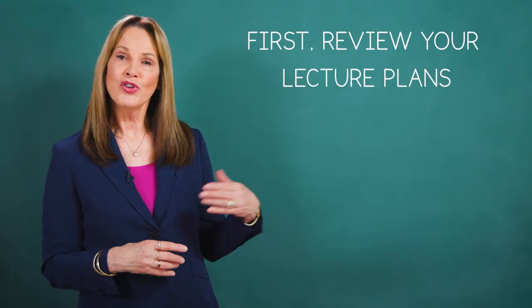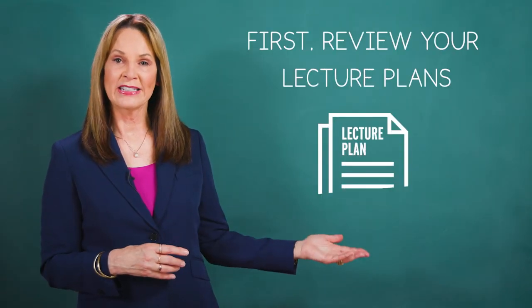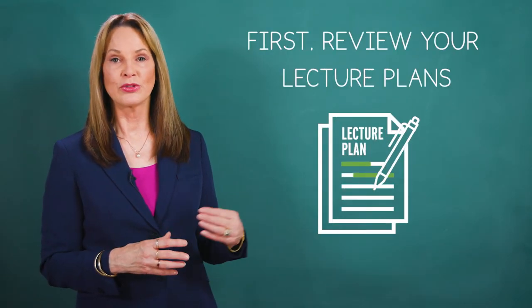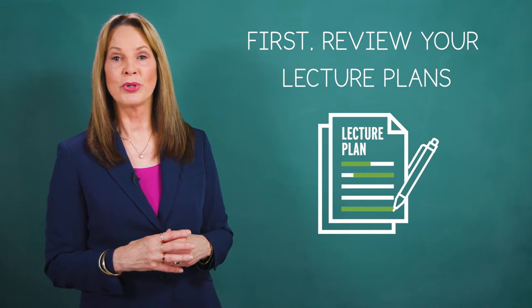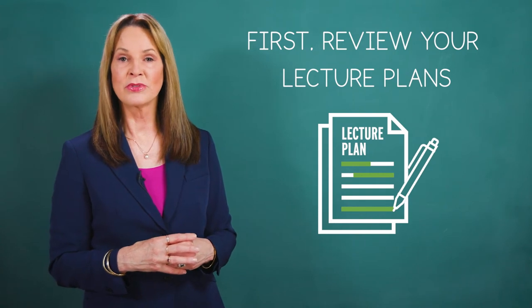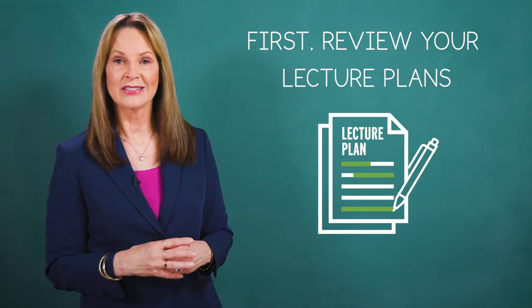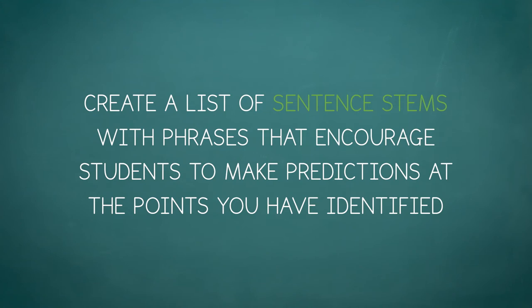First, review your lecture plans and identify two to three places where students could predict outcomes related to your content. Next, create a list of sentence stems with phrases that encourage students to make predictions at the points you have identified.